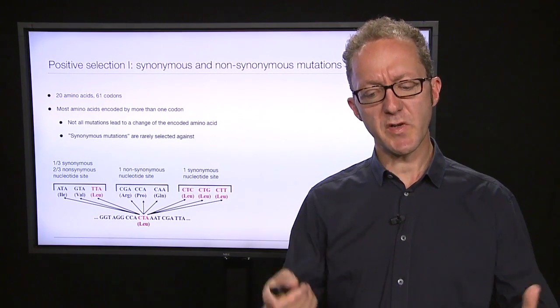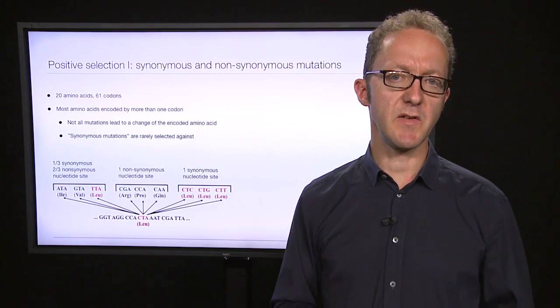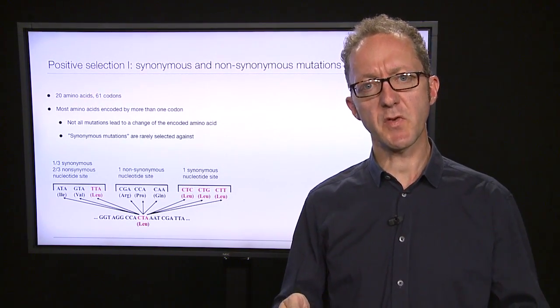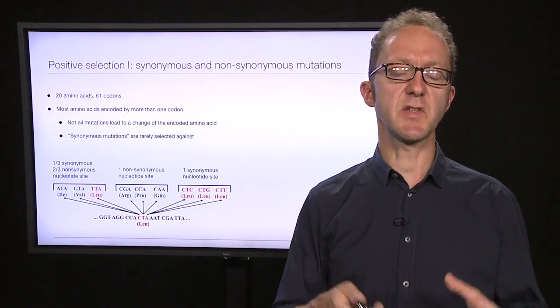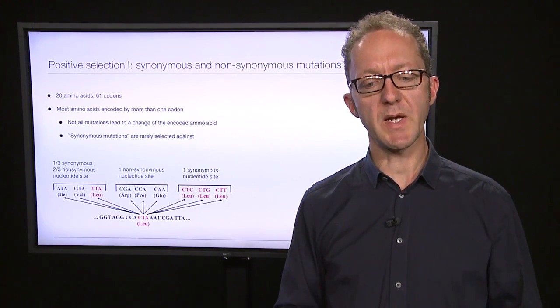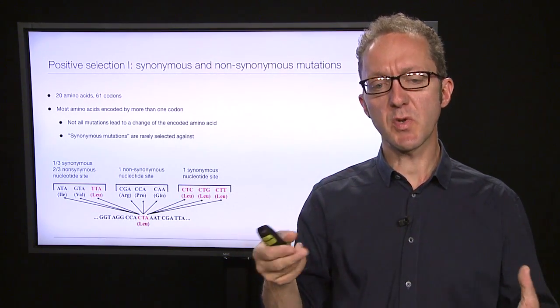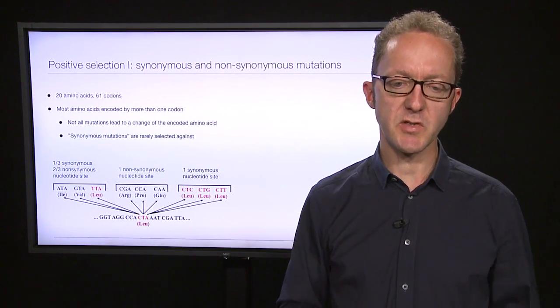So if what we're interested in is looking for signs of selection in a set of DNA sequences, we will therefore have to come up with some alternative hypotheses, some models assuming selection, some models not assuming selection, and each of those have to be phrased as mathematical models. So how would we make a substitution model that either assumed or did not assume selection going on in a set of sequences? That's the challenge here.